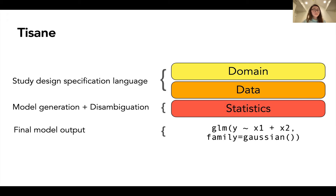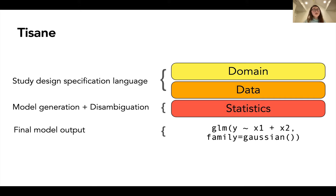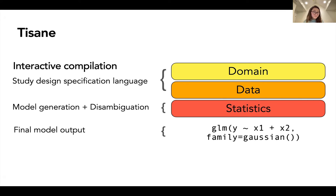To address this issue, we developed Tizan. Tizan is a mixed-initiative system that enables users to express and leverage their existing knowledge about their domain data. Under the hood, it derives a space of possible models that align all three concerns and engages end users in a disambiguation loop to narrow the space to a final output model. We call this end-to-end process interactive compilation. And in the spirit of Tizan — another name for herbal teas — let's start brewing up a Tizan program together.